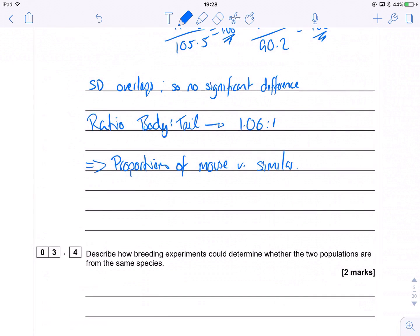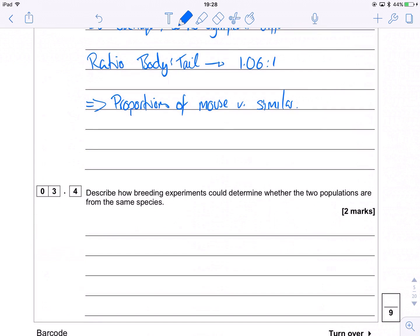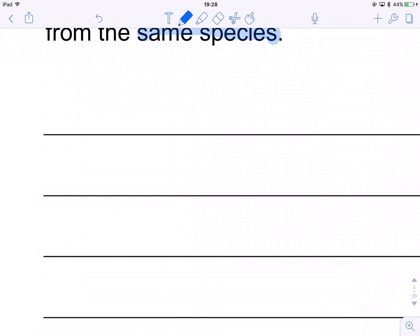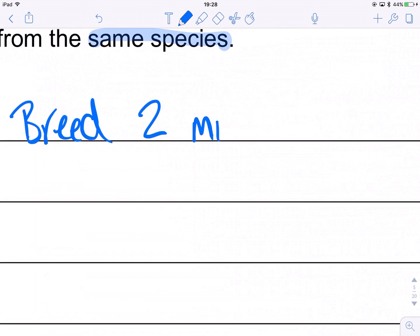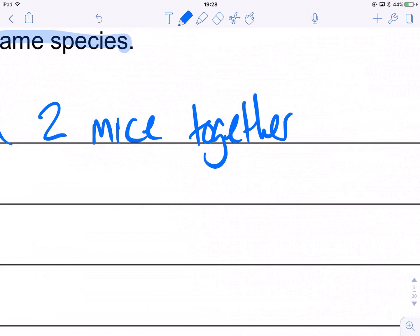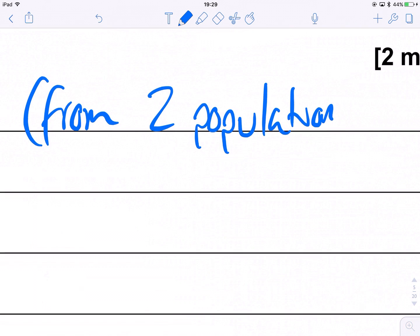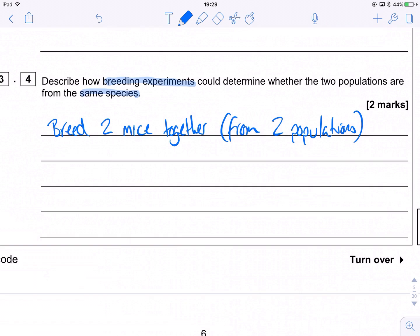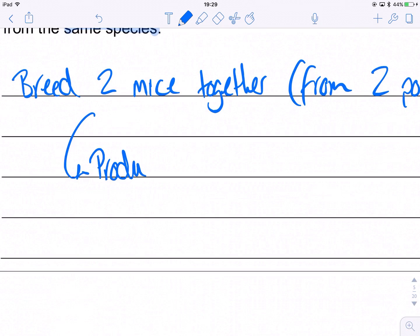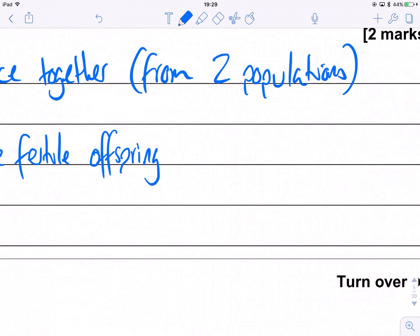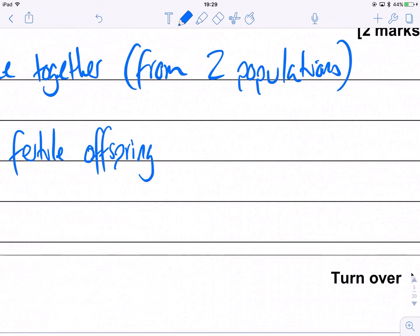It's quite a weird one, but hey, the best way to figure out whether these are the same species or not is answered in the next question. So describe how breeding experiments could determine whether they are from the same species. All you do, you take a male and a female from each species, or each proposed species, and you get them to breed together. So breed two mice together from the two populations. And then if indeed they are from the same species, they will produce fertile offspring. That's our definition of a species, two interbreedable groups that can produce fertile offspring. Delightful.